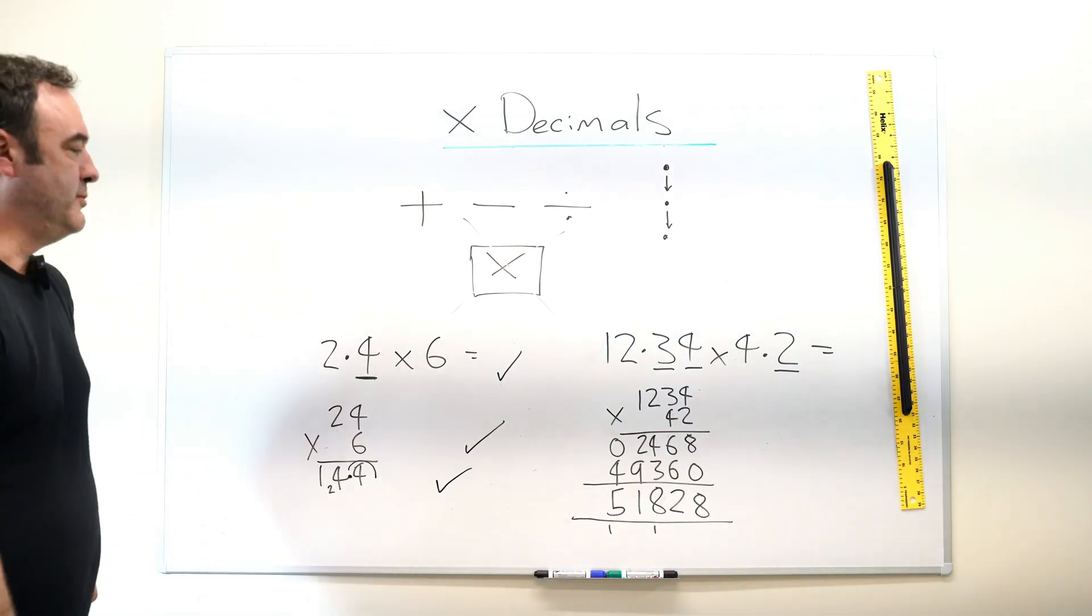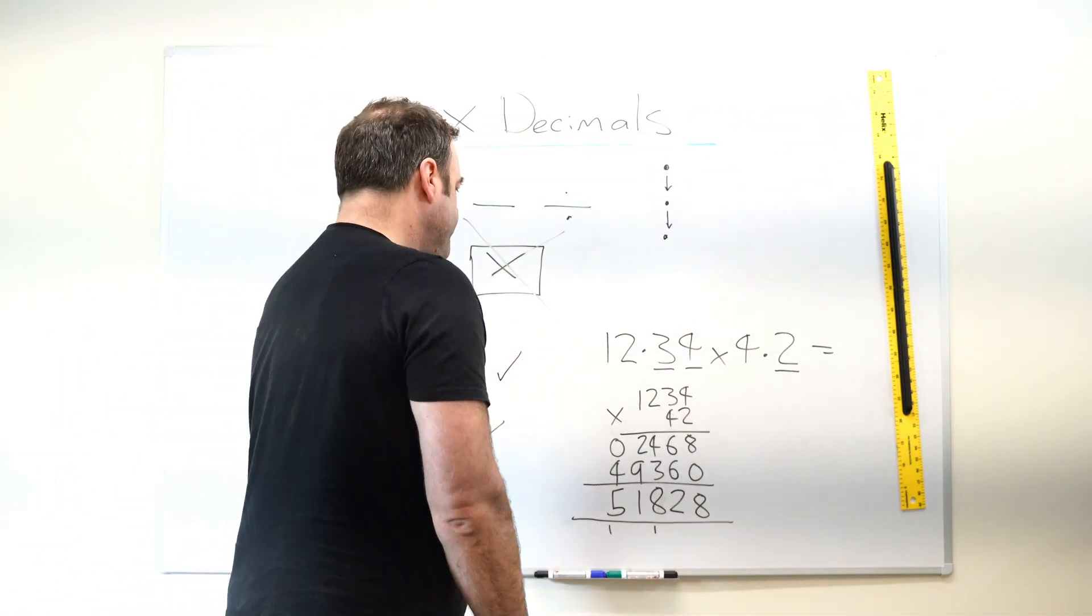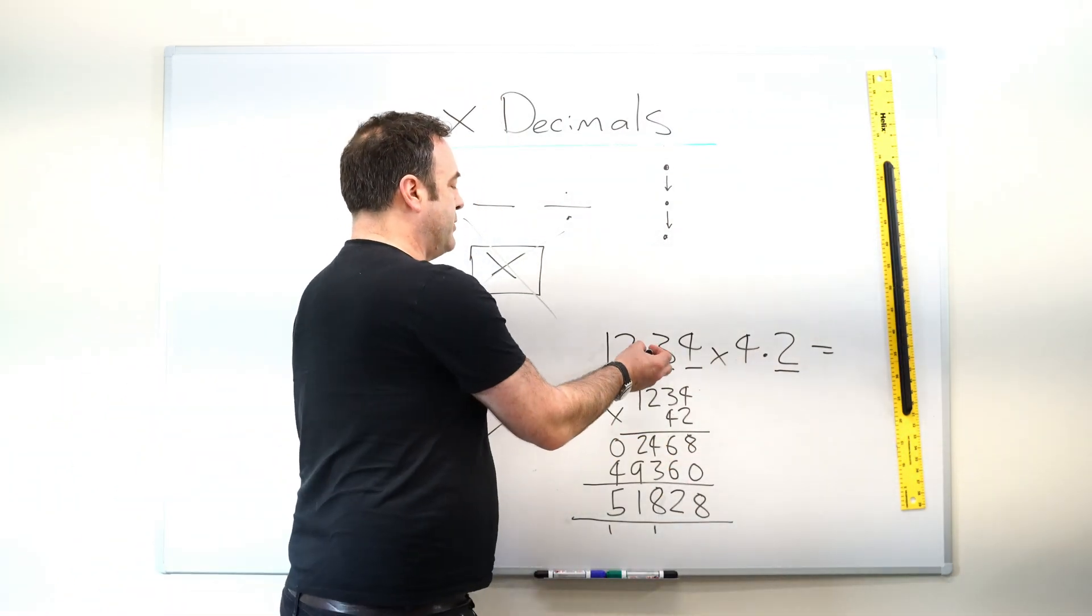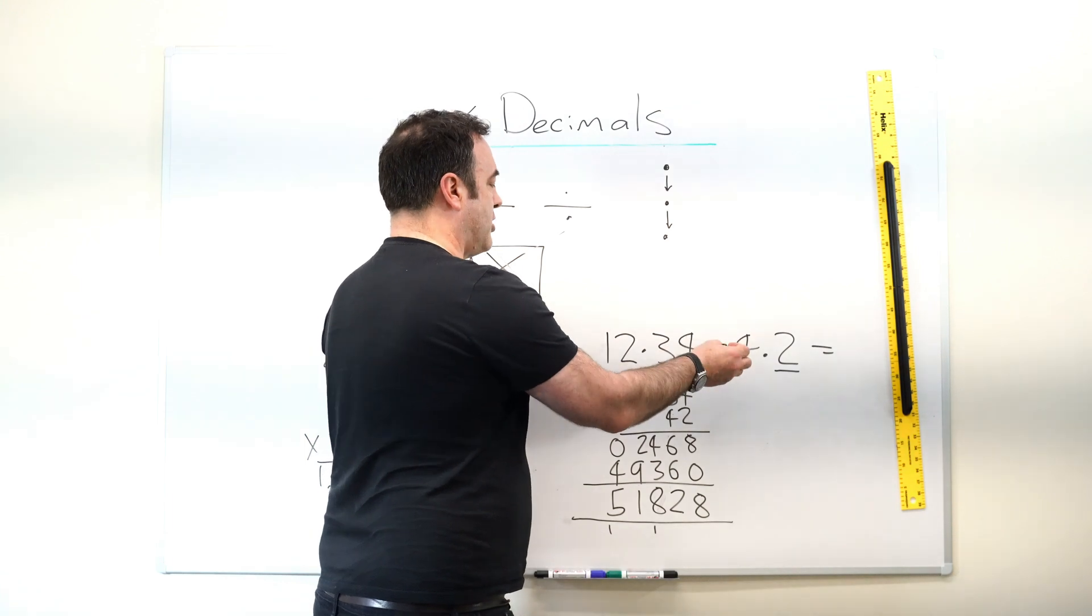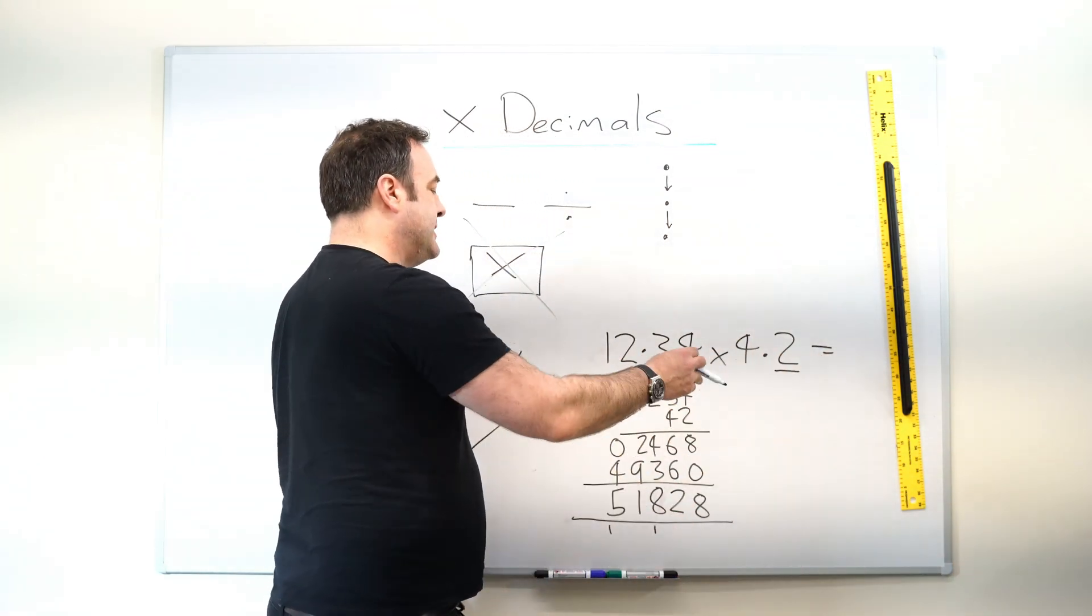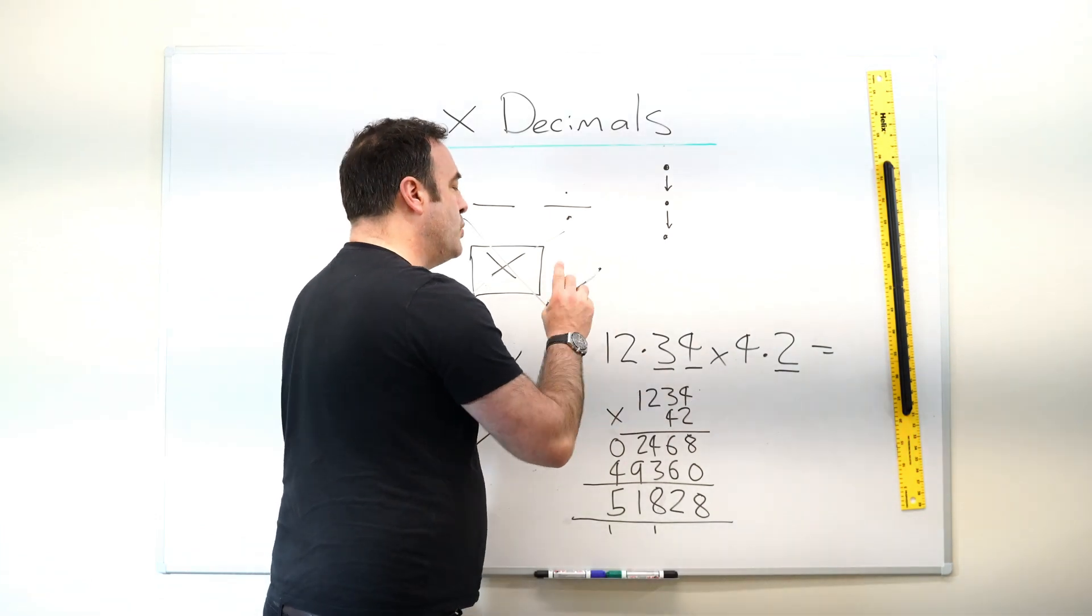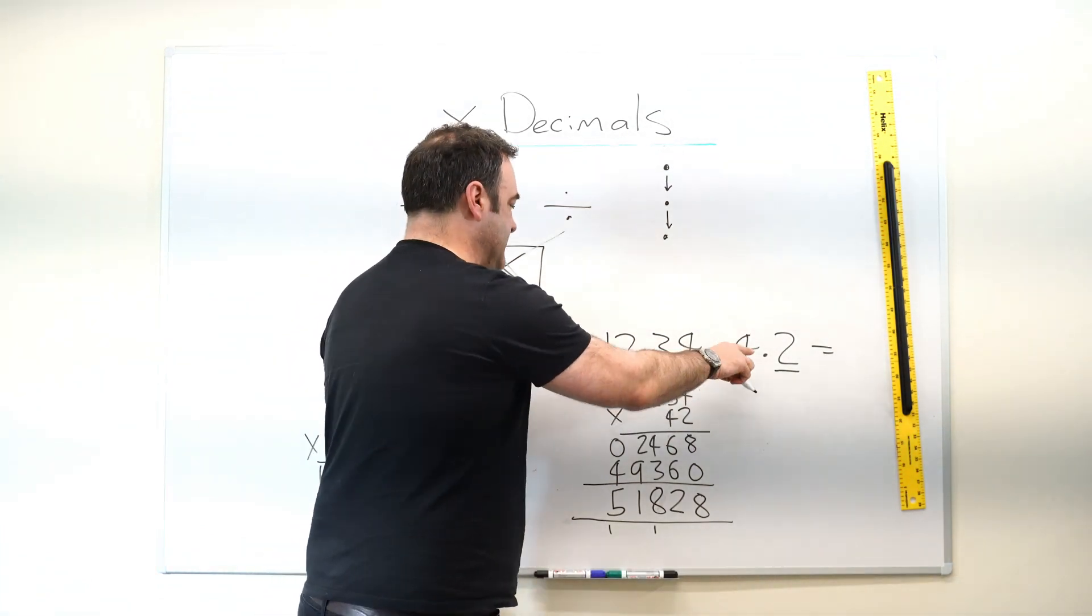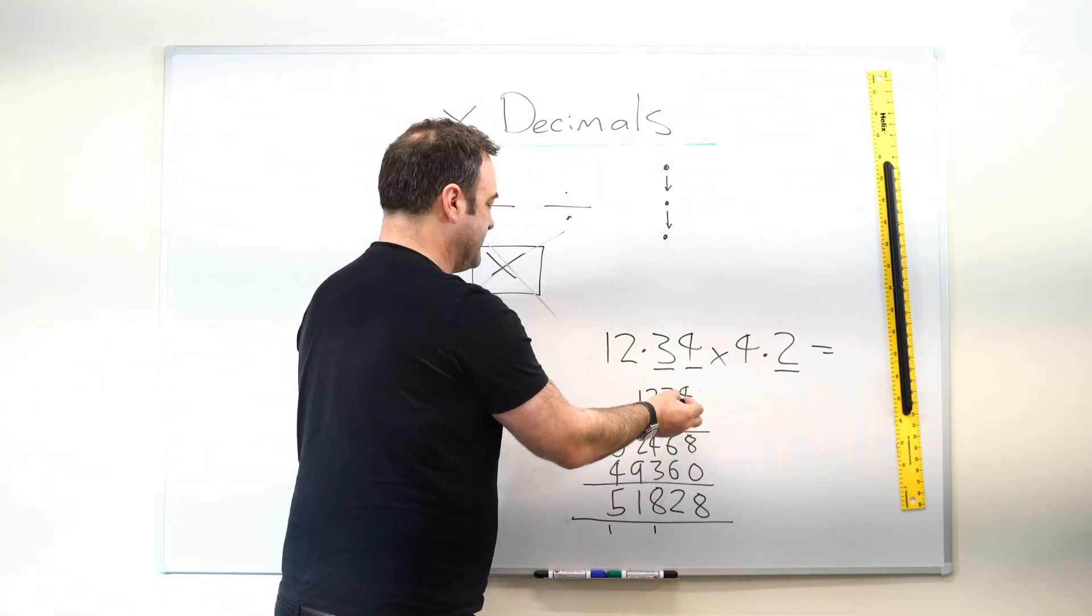Let's look at a more complicated example. We've got 12.34 times 4.2. So we copied it out first. Then we write it out without. So we exclude the decimal point. So 1234 times 42.